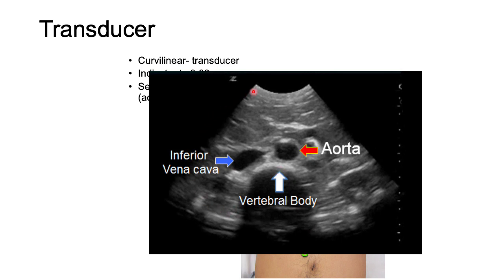In a transverse image of the abdominal aorta, the probe marker is towards the patient's right. The deepest structure is the vertebra leaving a vertebral shadow. The aorta and IVC are both superficial or anterior to the vertebral body. The aorta lies on the left, the IVC lies on the right. The abdominal aorta is more circular compared to the IVC, which is more collapsed and changes diameter with respiration. The IVC may sometimes appear to pulsate due to close proximity to the aorta.